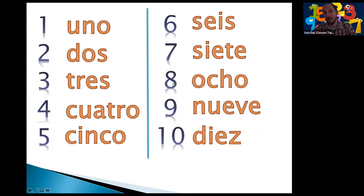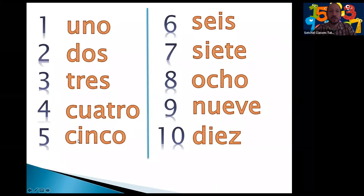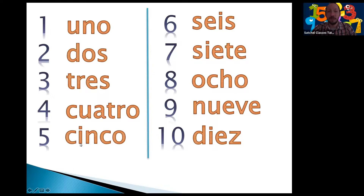Remember that the pronunciation of the Z and C in Spanish — particularly when it's CI or CE — will vary slightly from one country to another. For example, in South America 'cinco' is going to sound as I'm doing it now, but in Spain it's going to be more like 'cinco' with a th-sound. Always be aware that the pronunciation is going to change slightly — it's not massive, but there is a bit of a difference.